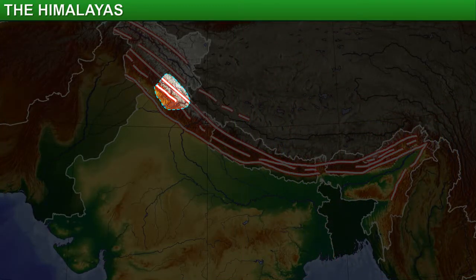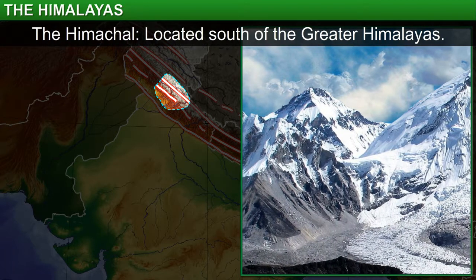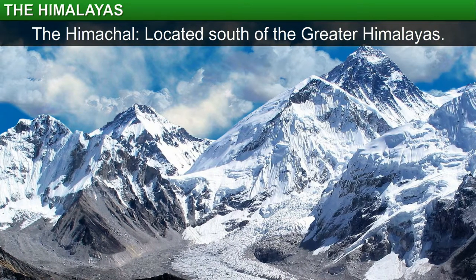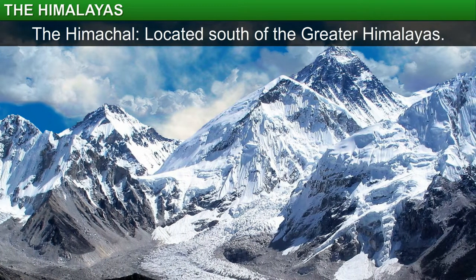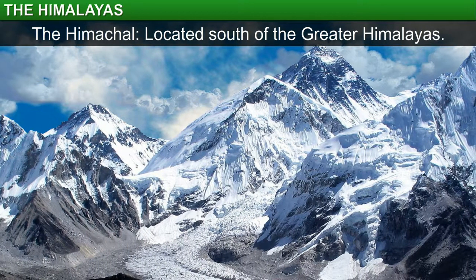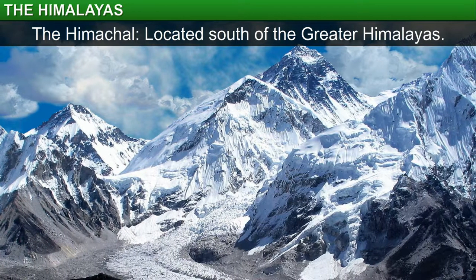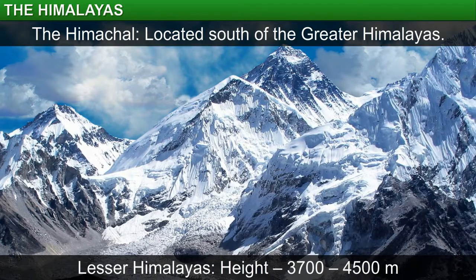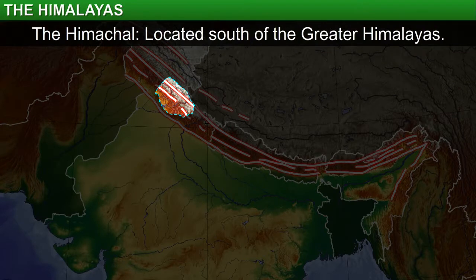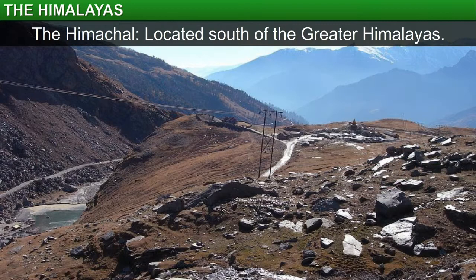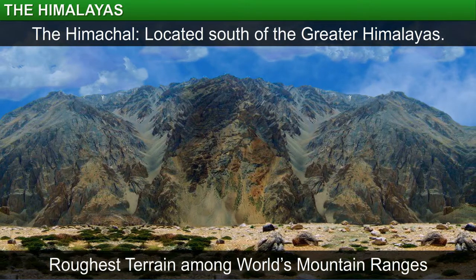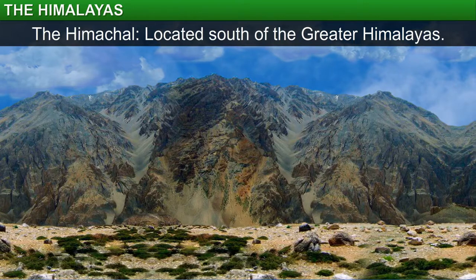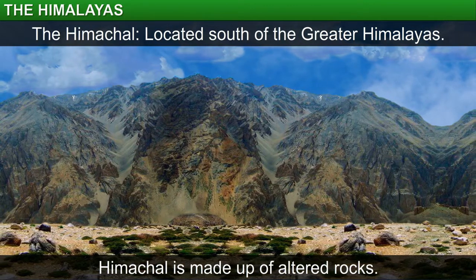The next range, which is known as the Himachal, is located south of the Greater Himalayas. The height of mountains in this range is between 3,700 and 4,500 meters, as against the average height of 6,000 meters in the Great Himalayas. Hence, this range is also referred to as the Lesser Himalayas. The average width of the Himachal range is 50 kilometers. This range has the roughest terrain among all the mountain ranges in the world. The terrain is composed of highly compressed rocks that have undergone considerable change in composition or appearance — in other words, the Himachal is made up of altered rocks.